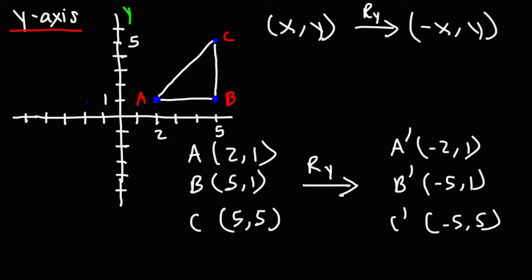Let's plot A first at (-2, 1), then B prime at (-5, 1), and C prime at (-5, 5). So this is A prime, B prime, C prime. That's how we can reflect a figure across the y-axis — all we have to do is use this process to change the points and then plot the new figure.